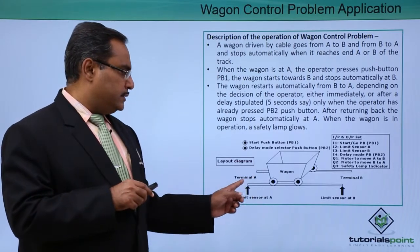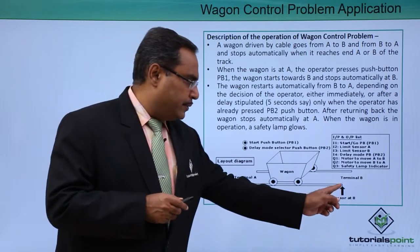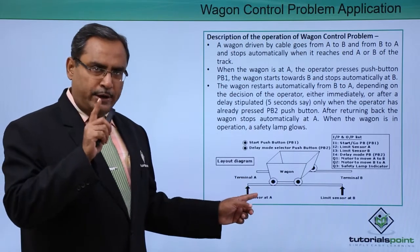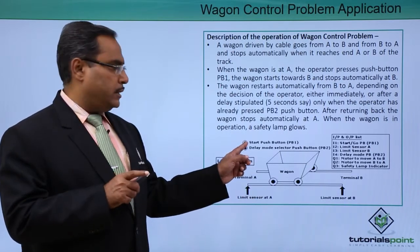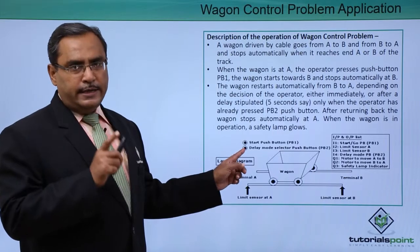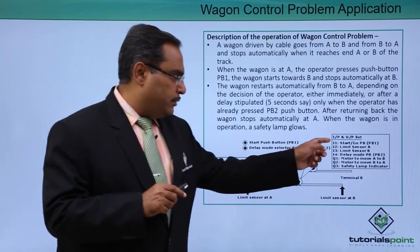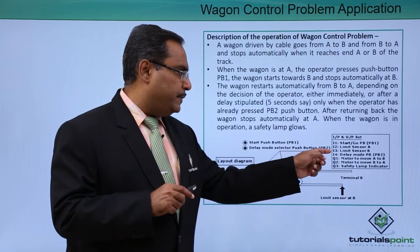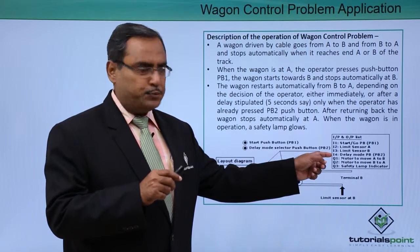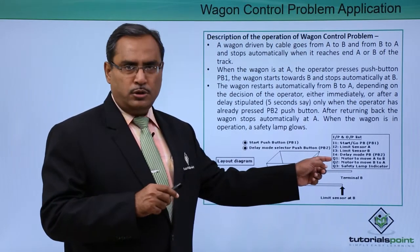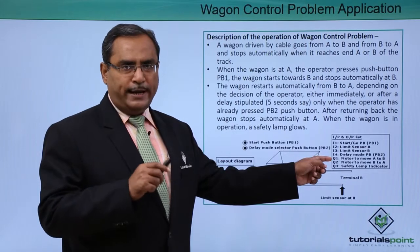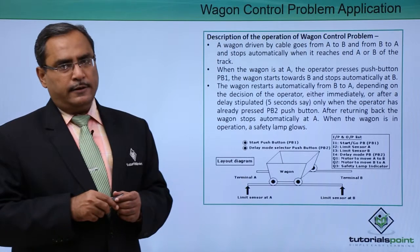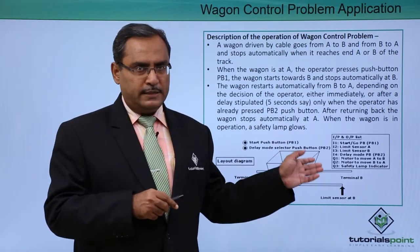This is the layout diagram showing terminal A and terminal B. We have two push buttons: one is the start push button and another is the delay mode selector push button. The inputs are: start, limit sensor A, limit sensor B, and the delay mode selector. We have three outputs: the motor moving the wagon from A to B, another motor from B to A, and the safety lamp indicator.